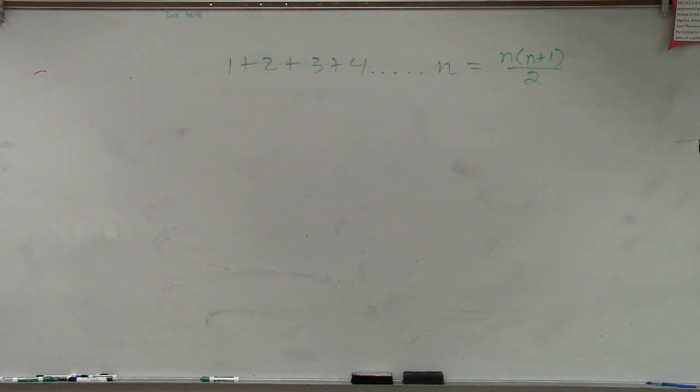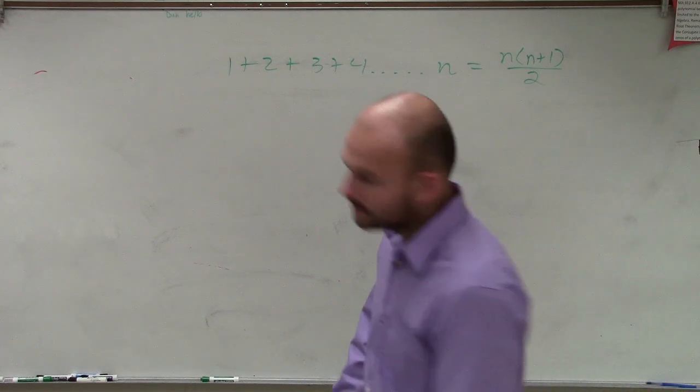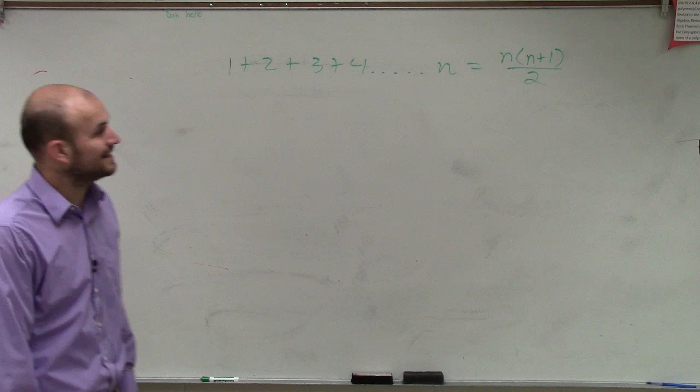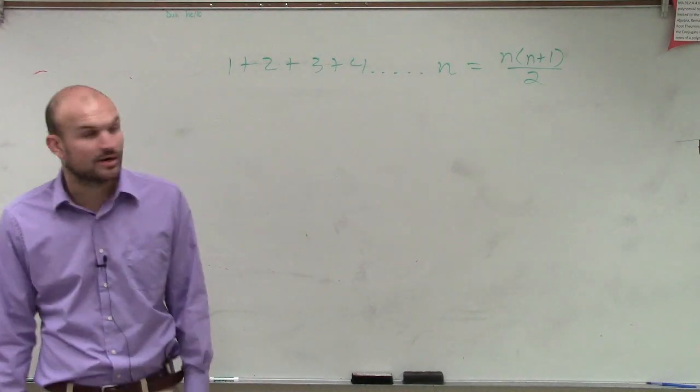OK. So for this problem, we have the sum of our n. And we have 1 plus 2 plus 3 plus 4 dot dot dot to n equals n times n plus 1 divided by 2.